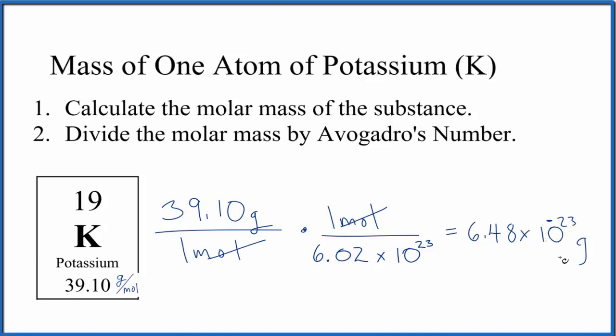Finally, this is the average mass for an atom of potassium. If you had a specific isotope, say potassium 40, you would put 40. That's the mass number for the isotope potassium 40. You put 40 in here instead of 39.10. Do the math. That would give you the mass of one atom of the potassium isotope potassium 40.